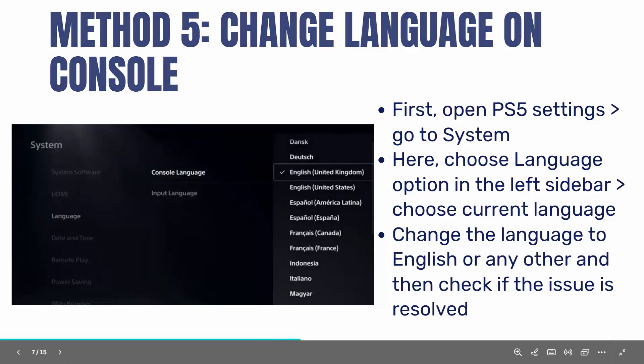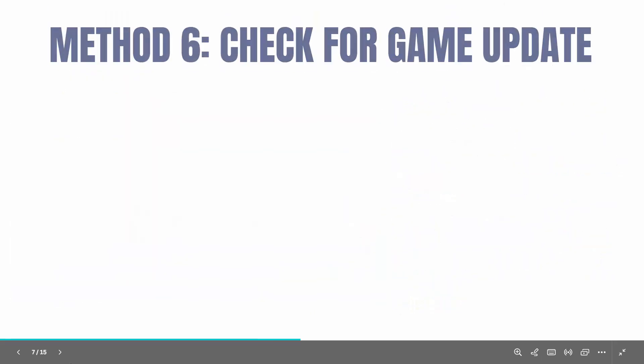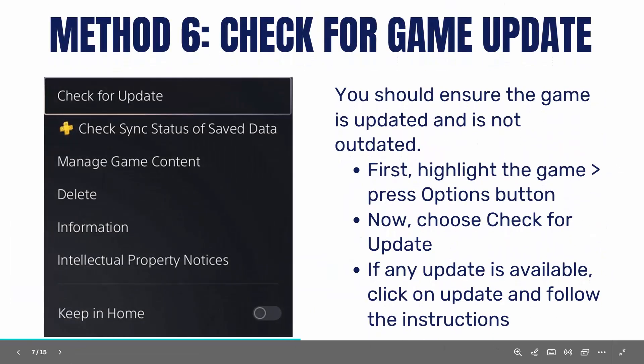The next method is to check for a game update. You should ensure the game is updated and not running on an outdated version. To do that, highlight the game, press the options button, and choose check for update. If any update is available, click on update and follow the instructions to proceed.